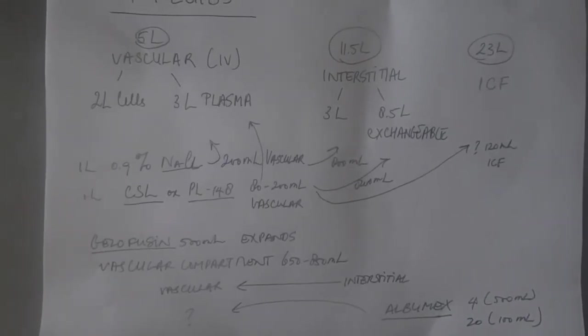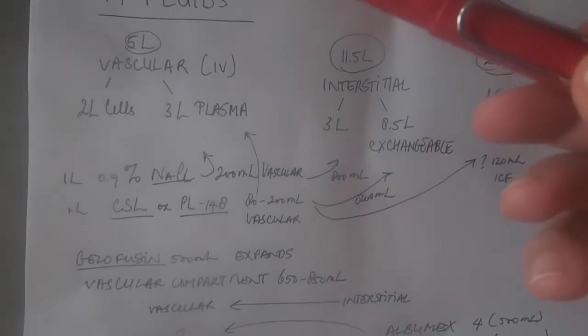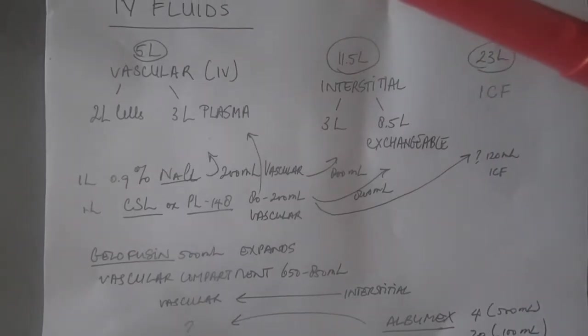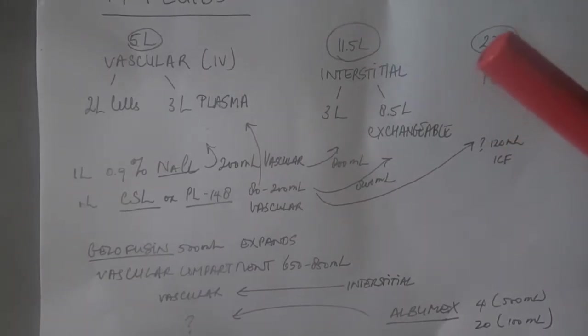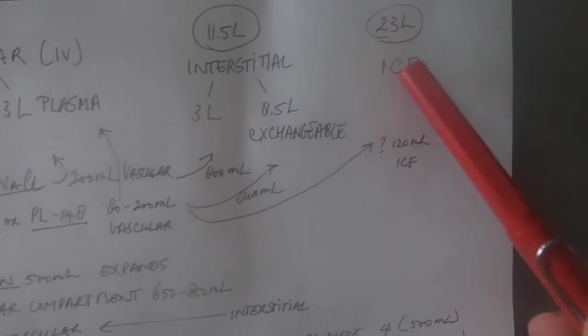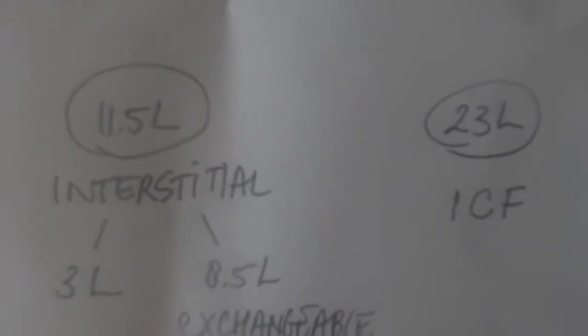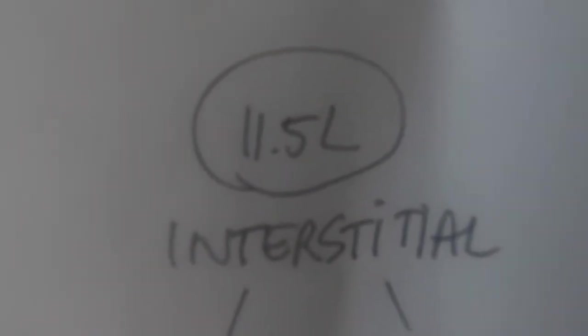Let's have a look at the different fluid compartments in the body. There's an intracellular fluid that's an average of 23 liters worth of water in there, and then we have two compartments of the extracellular fluid.